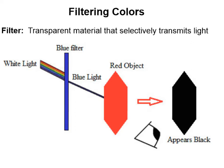What is a filter, and how are colors filtered? A filter is just a transparent material that selectively transmits light. So if we have white light with all the different colors and we pass that white light through a blue filter, only the blue wavelengths of light will be transmitted. If that blue light hits an object that would normally appear red — because it reflects red wavelengths — we will see that red object as black, because there is no red light available to be reflected. It will appear to reflect no light, because it's absorbing the blue light rather than reflecting it.